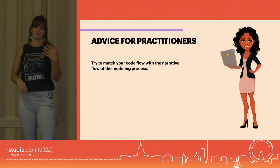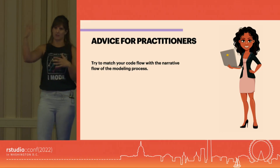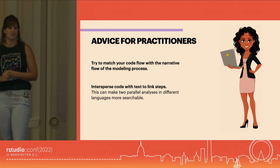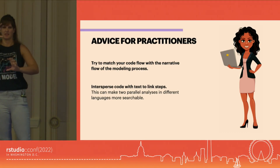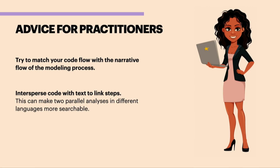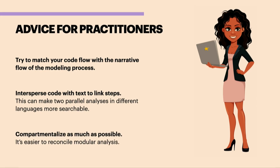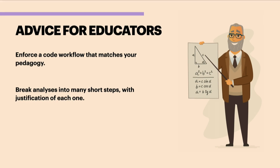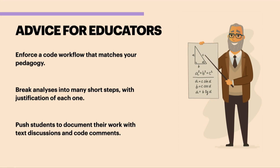My advice for users: try to match your code flow with your narrative where you have choices. Intersperse your code with text — this is why discussion and documentation is so important. If you're doing two parallel analyses in different languages and have to shuffle parts, you'll need that discussion text to help match them up. Make your steps modular: here's where we choose the model, here's where we choose the predictors. For educators, enforce a workflow on your students that matches the way you teach it. Break analyses up, isolate decisions so that when students see them in different orders, they recognize that decision. Push students to document and write what they're doing outside the context of the code.